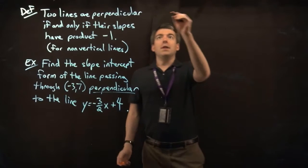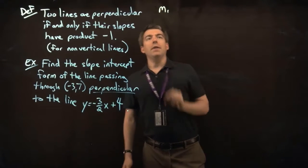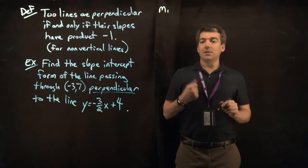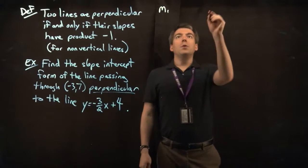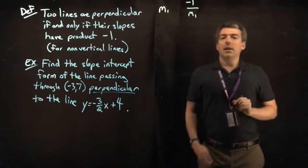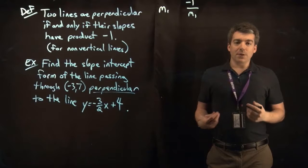So for example, if the slope of a line were m1, then the slope of a line perpendicular to this line of slope m1 would be the following: 1 over m1, but then the opposite. So sometimes we call that the opposite reciprocal.